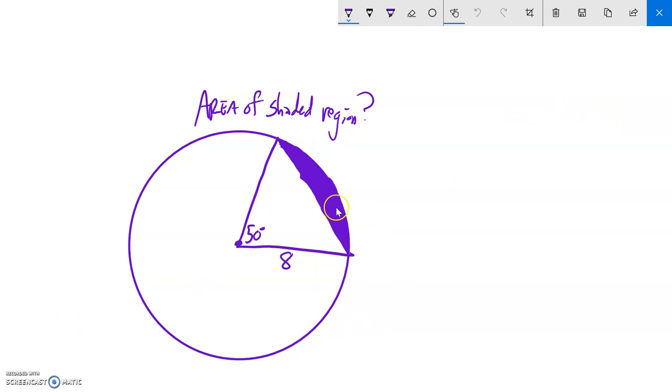So I am interested in trying to find the area of this shaded region of the circle right here. So there's a couple of steps I'm going to do to solve this, but I'm going to think about it this way.